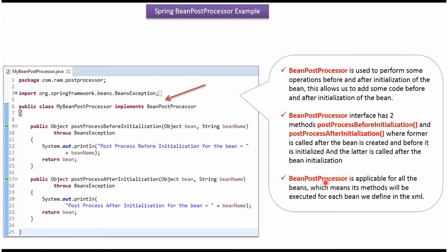BeanPostProcessor is applicable for all beans which are defined in the Spring configuration file, meaning its methods will be executed for each bean defined there. Here I have defined the class MyBeanPostProcessor, which implements BeanPostProcessor and provides implementations of postProcessBeforeInitialization and postProcessAfterInitialization.